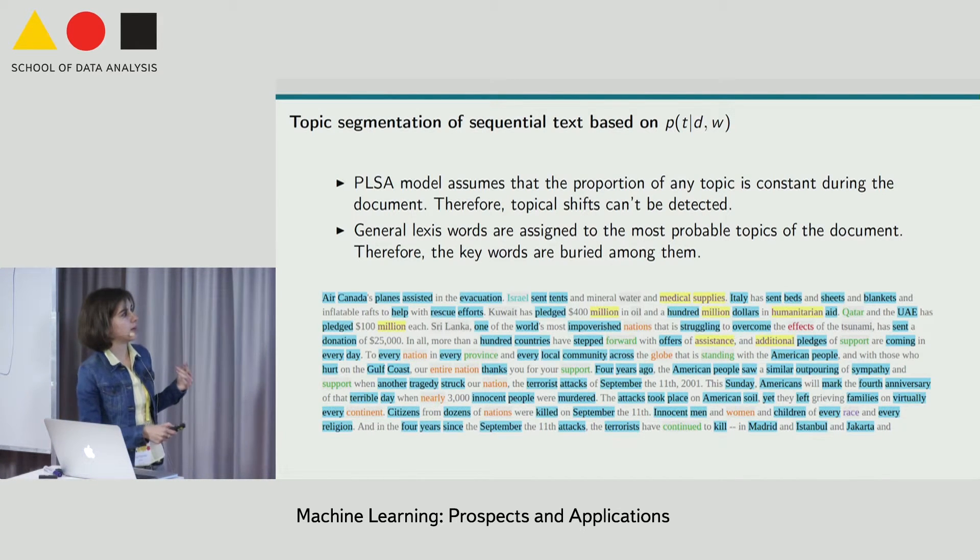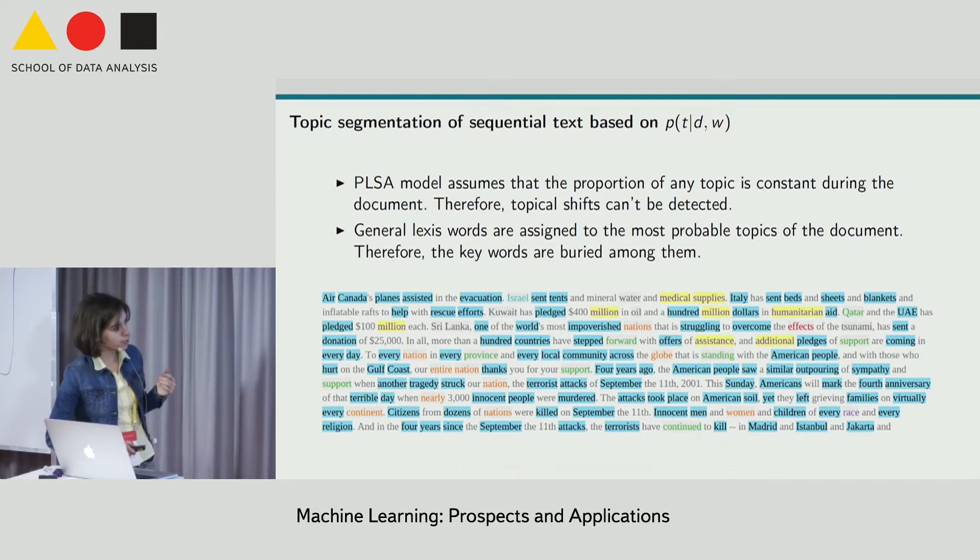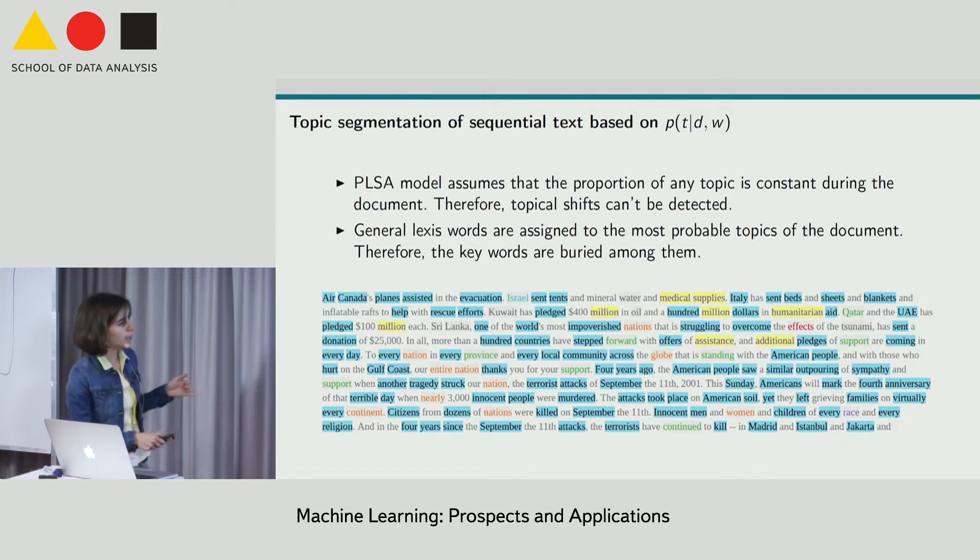When the topic model is learned, it evaluates distributions of topics for each word in each document. Here we just color the most probable topic for each word. And these blue terms all are assigned to the topic about terrorism, but you can see that most of them do not relate to it at all, like Canada, help, evacuation, and so on.